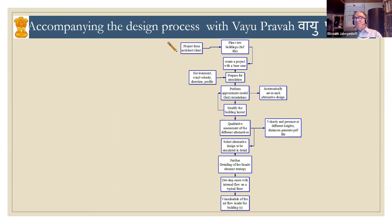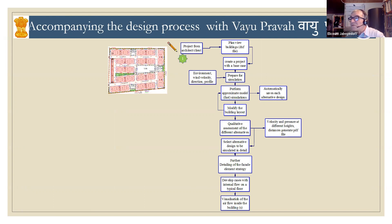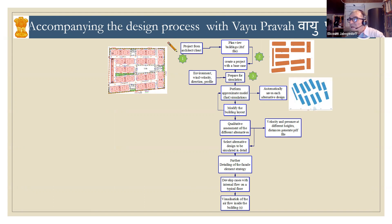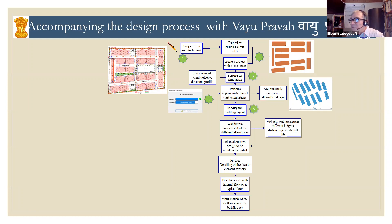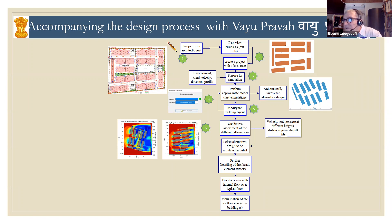Now, how do we use this software? The first step is to get drawings from an architect or a client developer, then introduce them into the software in DXF format. Then we prepare the simulation by setting the wind conditions, and we get a simulation — normally within a few minutes if the case is not too complicated. After that, we can modify the building layout and compare different alternatives. Each time we have results, we can also generate PDF files to compare results between two alternate designs.